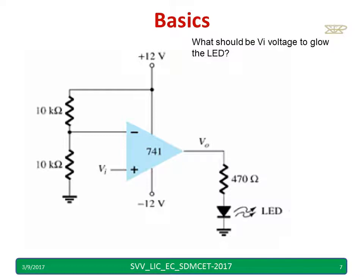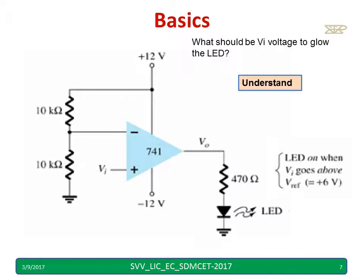LED will glow in forward bias, so we need a high output. When we use an op-amp in open-loop configuration, we get either plus Vsat or minus Vsat. LED will glow when we get plus Vsat. The inverting terminal is at 6 volts, so when VI goes above 6 volts, the output V0 becomes plus Vsat and the LED will glow. This is one basic concept used in 555 Timer operation.